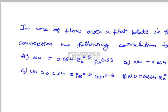In forced convection, the Nusselt number does not depend on buoyancy forces. Therefore we can easily eliminate options B, C, and D, since all three contain the Grashoff number and do not correctly represent the Nusselt number correlation for forced convection.